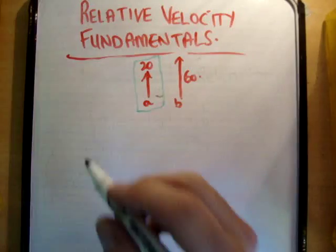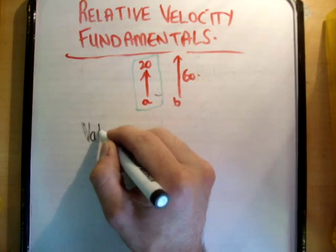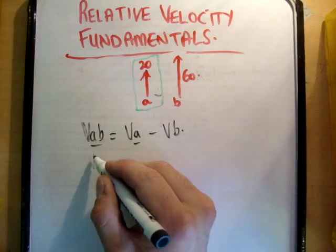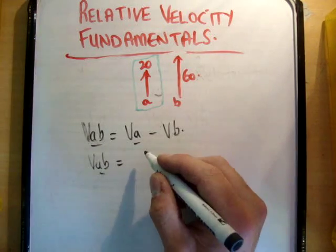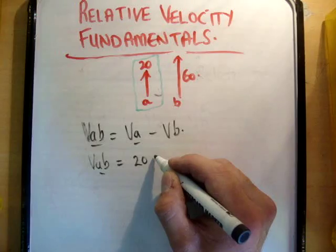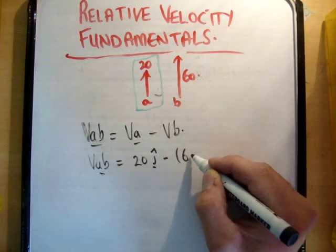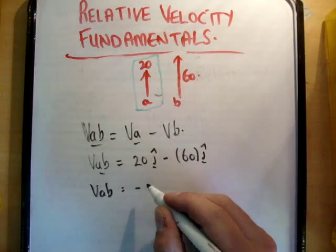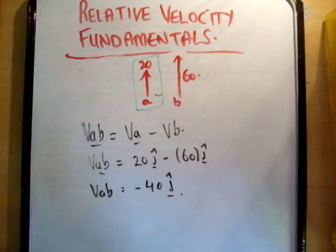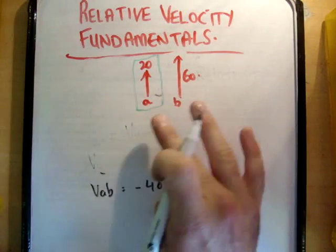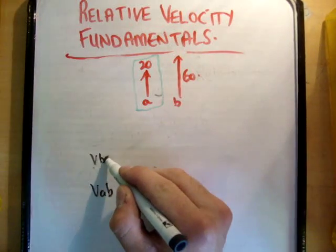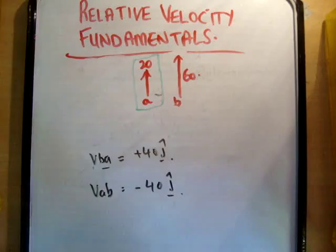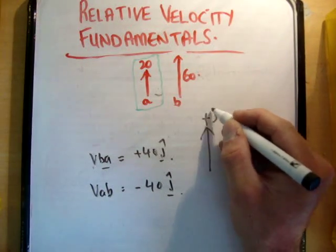So, what is VAB in this case? VAB is equal to VA minus VB. These are vectors, so we have direction. VAB is equal to 20 J-hat minus 60 J-hat. So, VAB is equal to negative 40 J-hat. Let's think about this. VBA is equal to plus 40 J-hat. We're defining plus J as in this direction.